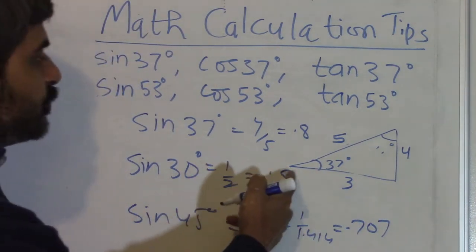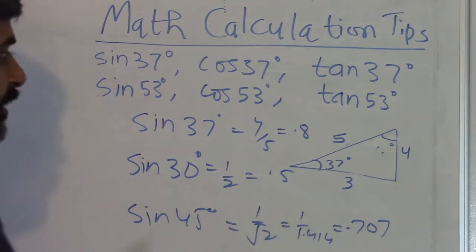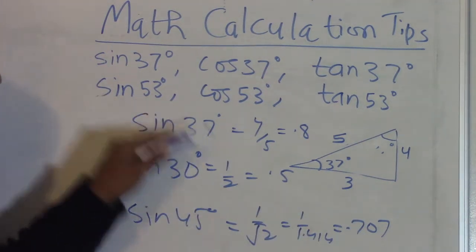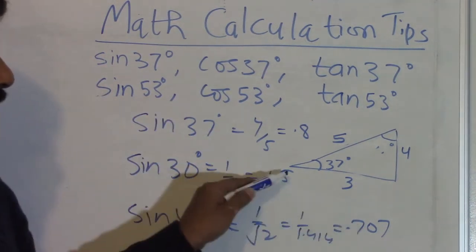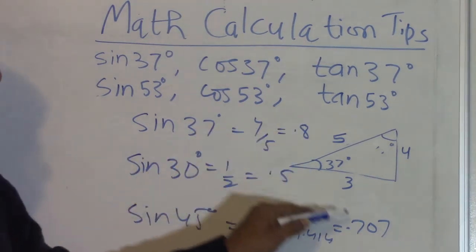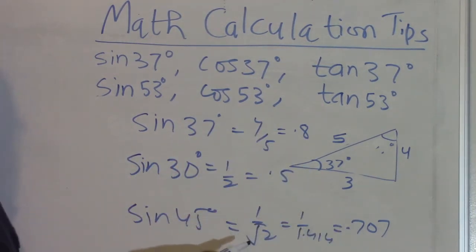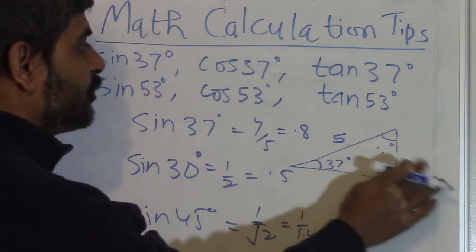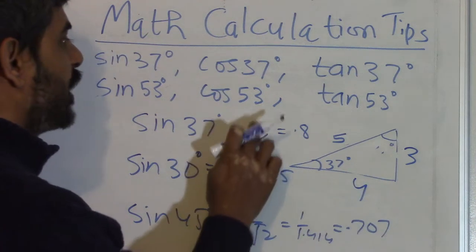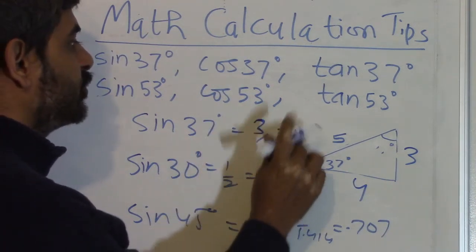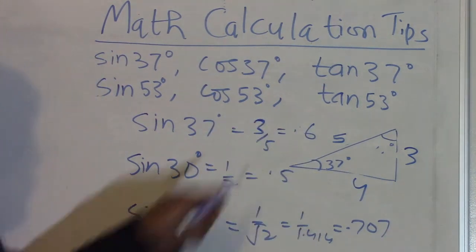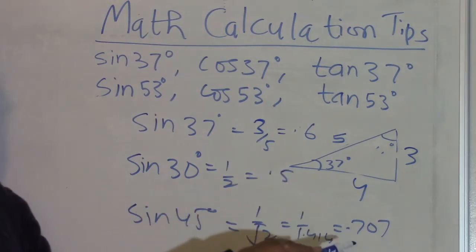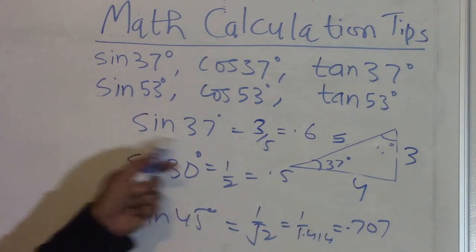Now this is 0.5, this is 0.707. So this value sin 37° should be in between 0.5 and 0.707. Now 0.8 is even greater than sin 45°, so obviously this is wrong. So what you do? You again change this to 3 and 4, and you write it 3 by 5. This comes to be 0.6, and now 0.6 is in between 0.5 and 0.707. So this is the right value.